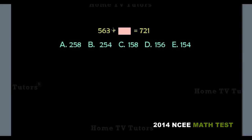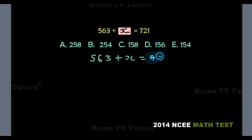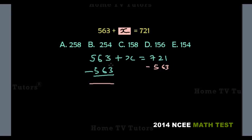563 plus an unknown number equals 721. Let this unknown number be represented by the letter X. So you subtract 563 from both sides: 563 minus 563 on the left gives us 0, and we are left with X. On the right-hand side, 721 minus 563: 1 minus 3 is not possible, so we borrow 1 from the left. 11 minus 3 gives us 8.